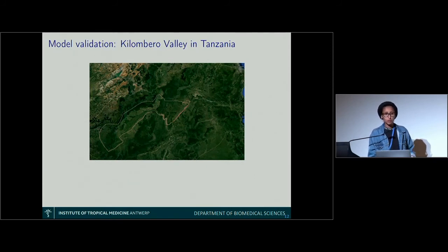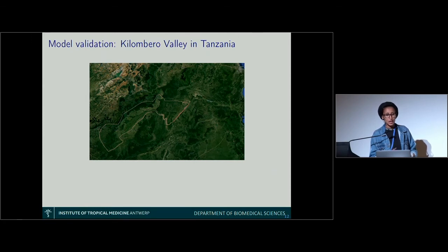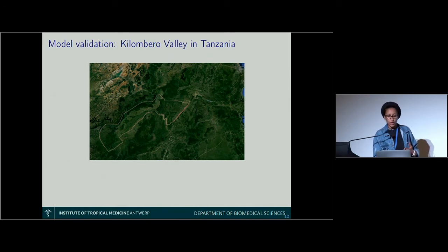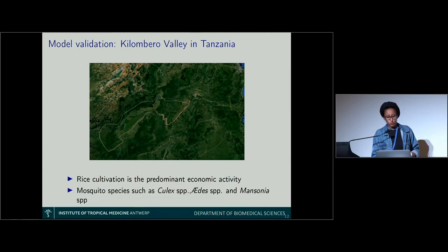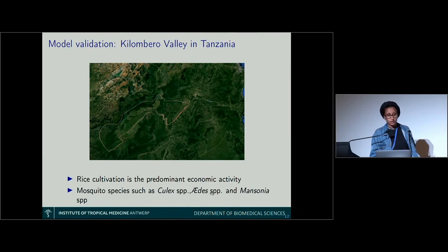The model needs to be validated, and validation is done in Kilimbiru Valley in Tanzania. Kilimbiru Valley is the ideal place for Rift Valley Fever transmission: it is seasonally inundated, there are many floodplains, villages nearby, and cohabitation between humans and cattle. Rice cultivation is the predominant economic activity. We have all the species that allow virus transmission: Culex, Aedes, and Mansonia mosquitoes.